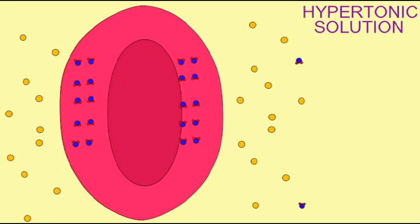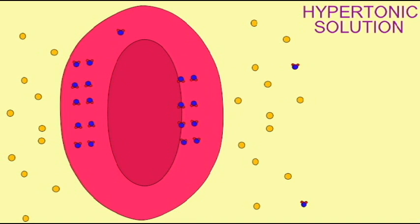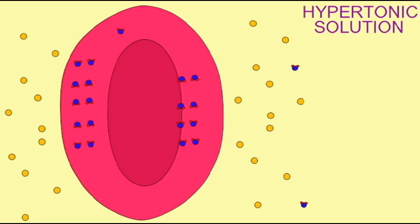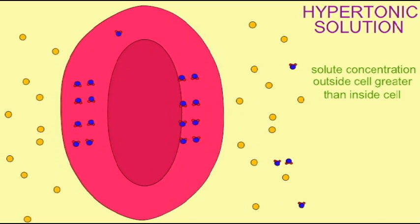When the solution around a cell is hypertonic compared to the cell, hyper means too much, and a hypertonic solution has a higher concentration of solute than one finds inside the cell.